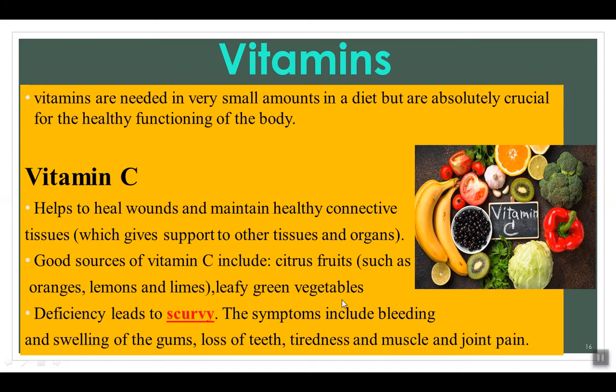Vitamin C is needed to make fibers of connective tissue, which acts as a glue bonding cells together in a tissue. It also helps to heal wounds. Fresh fruits and vegetables, specifically citrus fruits, are a great source of vitamin C. Vitamin C deficiency leads to a disease called scurvy. Scurvy is not very common anymore, but several hundred years ago sailors would often get it due to limited diets without fresh fruits and vegetables, causing their collagen connective tissues to break down.